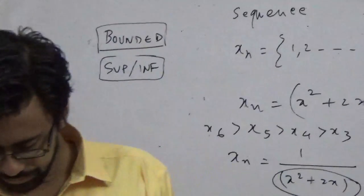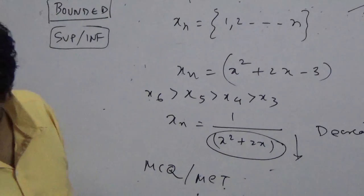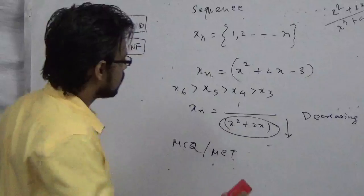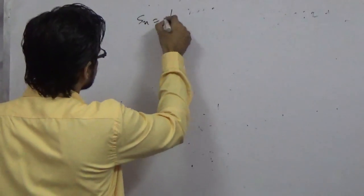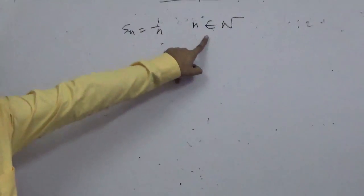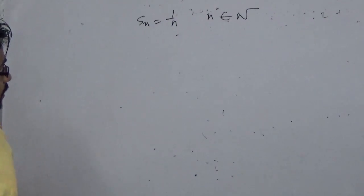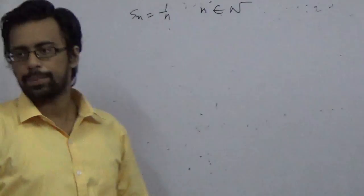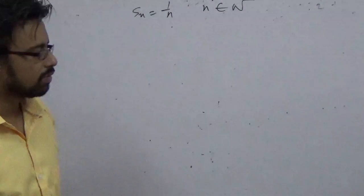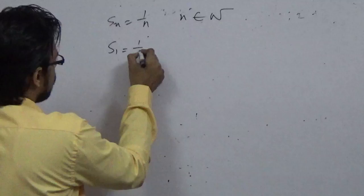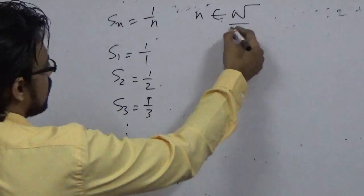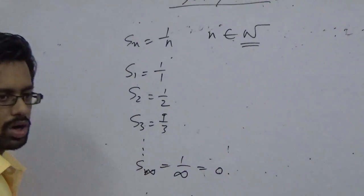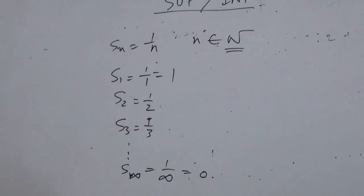Let's start with an easy question. The sequence is S_n equal to 1 by n, where n belongs to natural numbers. For Suprema and Infima, first check what happens as values increase to infinity. The first value is 1 by 1 equals 1, the second is 1 by 2, then 1 by 3, and as n tends to infinity, S_n becomes 1 by infinity which is 0. So the sequence goes from 1 down to 0 — this is a bounded sequence.